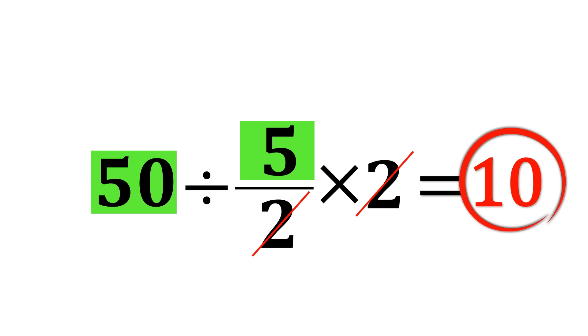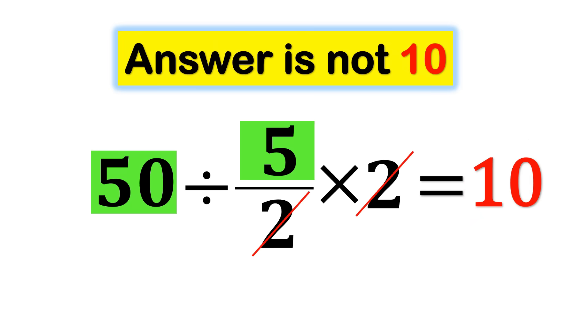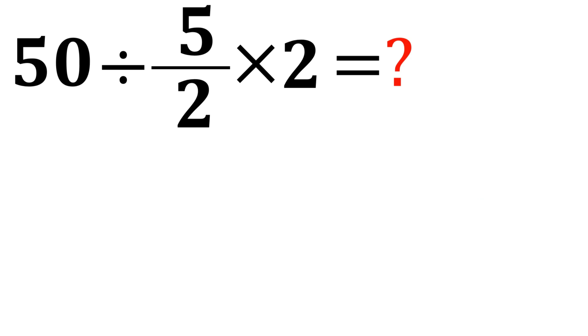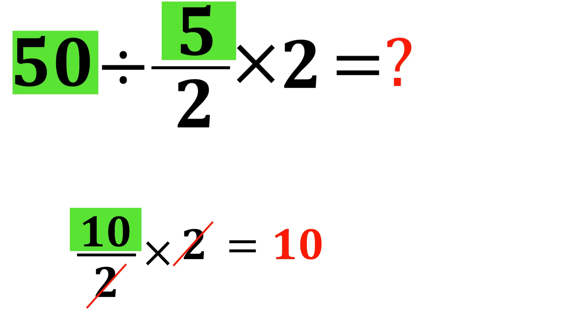Neat and logical, right? But that is the exact trap 90% of people fall into. Others try to follow the math left to right by doing 50 divided by 5, then dividing by 2, then multiplying by 2. They still end up right back at 10.